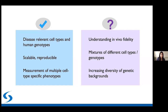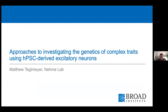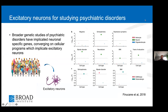With that, I'd like to hand it over to Matt Tektmeyer, who will tell you about excitatory neurons first. I'm going to follow up on what was discussed and give you an overview of the current approaches we are taking utilizing iPSC-derived excitatory neurons to investigate the genetics of complex neuropsychiatric traits. Our primary motivation for choosing this cell type is based on broader genetic studies of psychiatric conditions, which have implicated neuronal-specific genes that converge on cellular programs specifically implicating excitatory neurons.